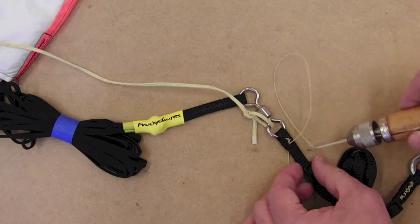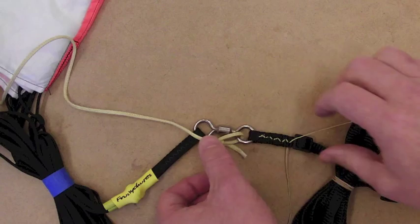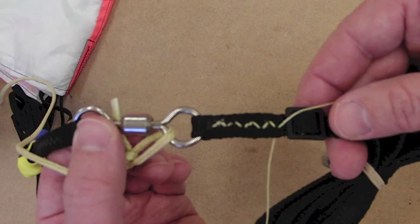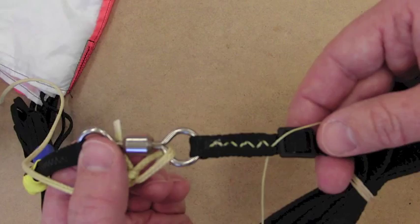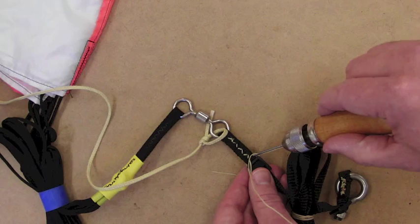Now we've zigzagged back and forth. Not the neatest job in the world, but you can see how we've done that. Now we're ready to start back in the other direction. We go straight across from our last point, through, and we're going to stitch exactly the same way.